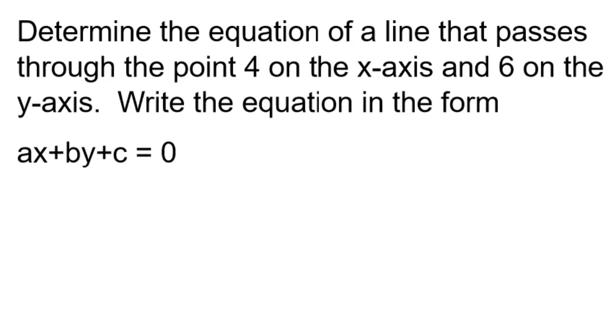So that's called standard form in equations, or a version of standard form. And so the first thing we want to talk about is what does 4 on the x-axis mean? Well, it actually means the point (4, 0). And 6 on the y-axis means (0, 6). Because we always write our ordered pairs where x is first, y is second.